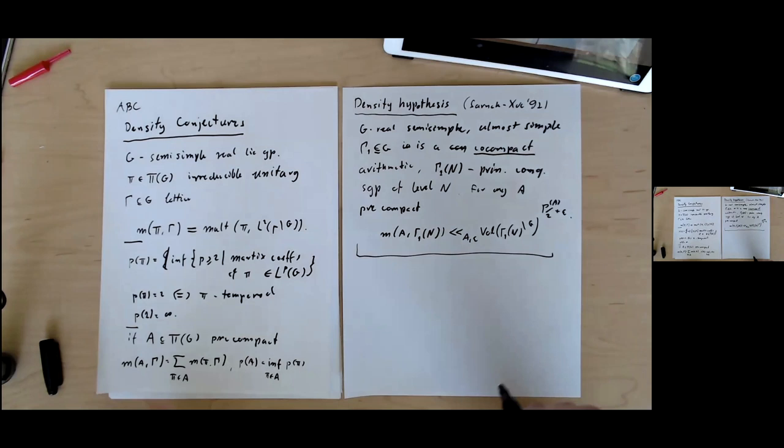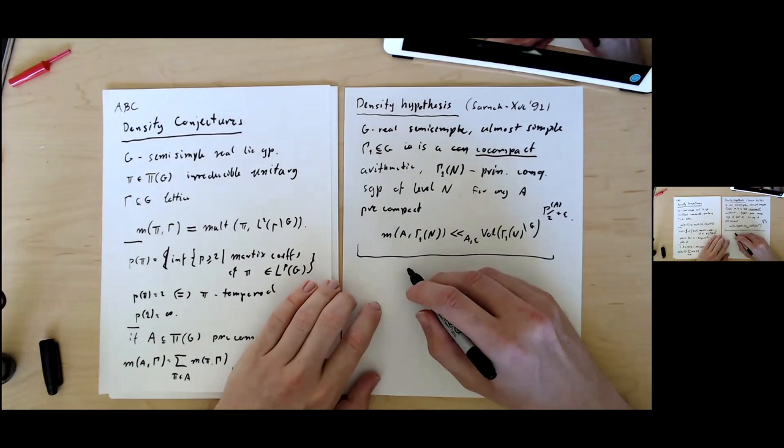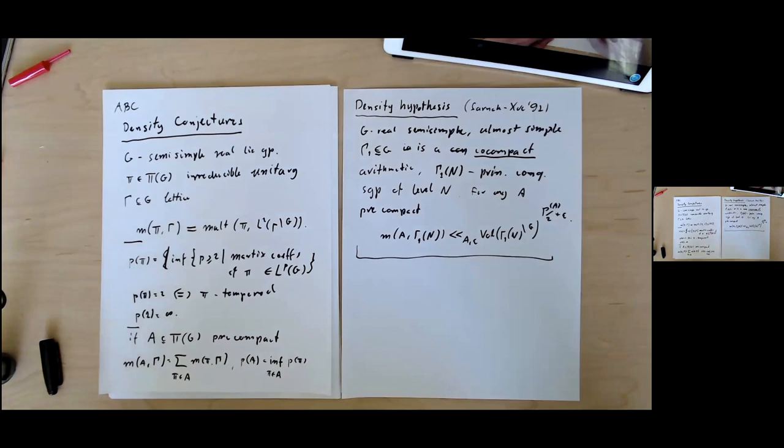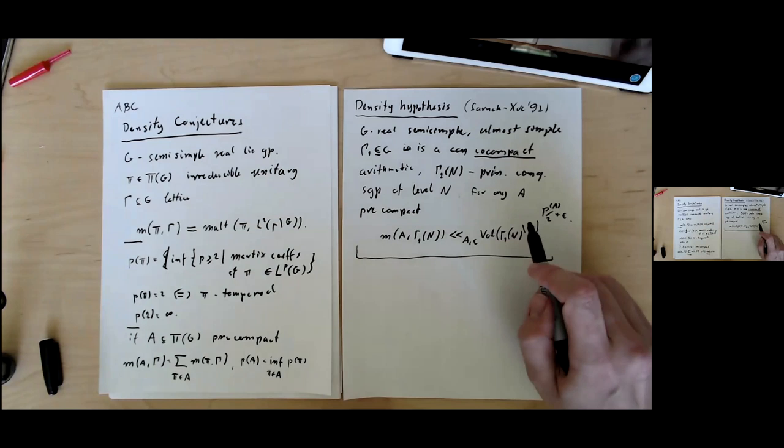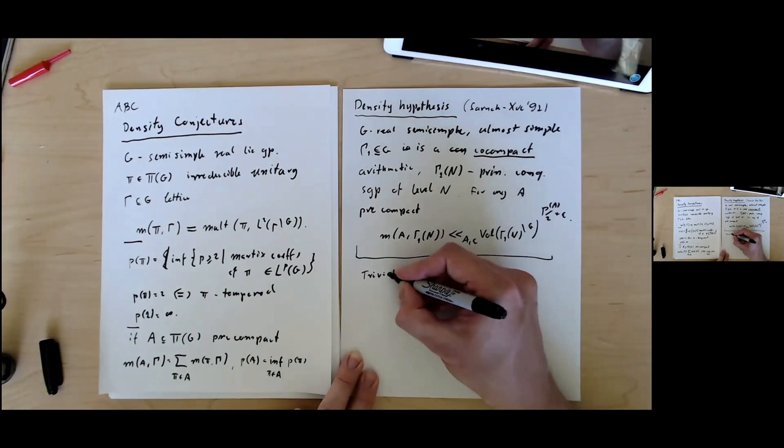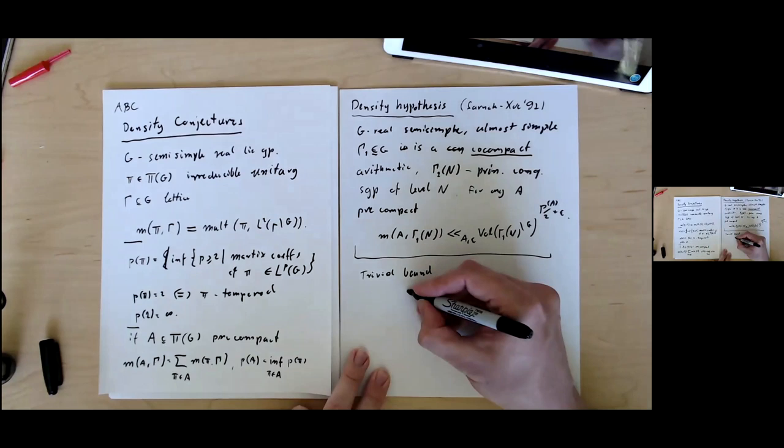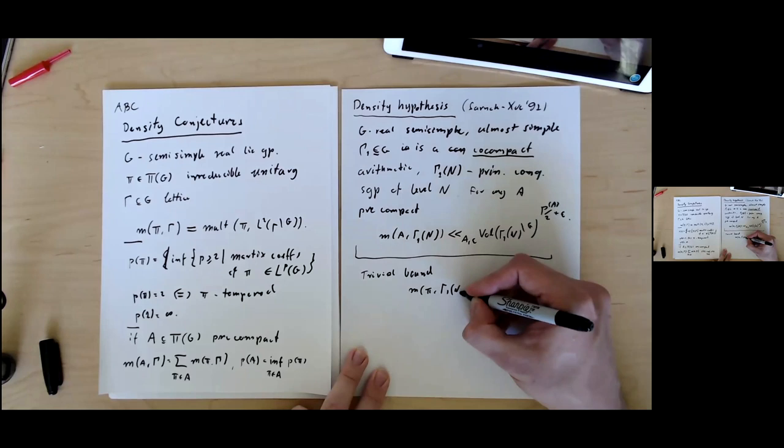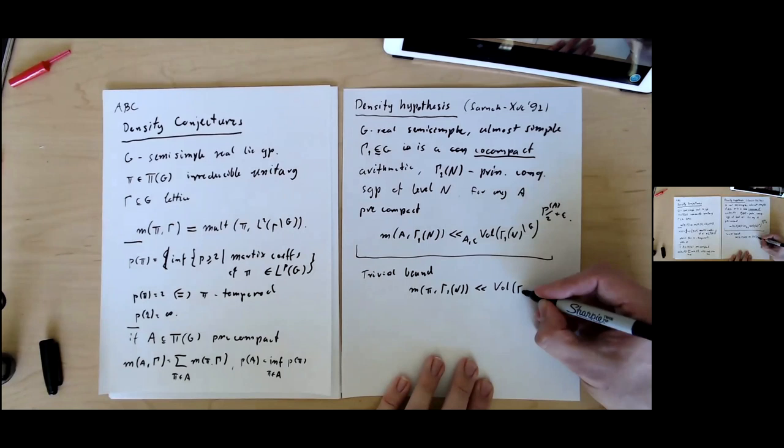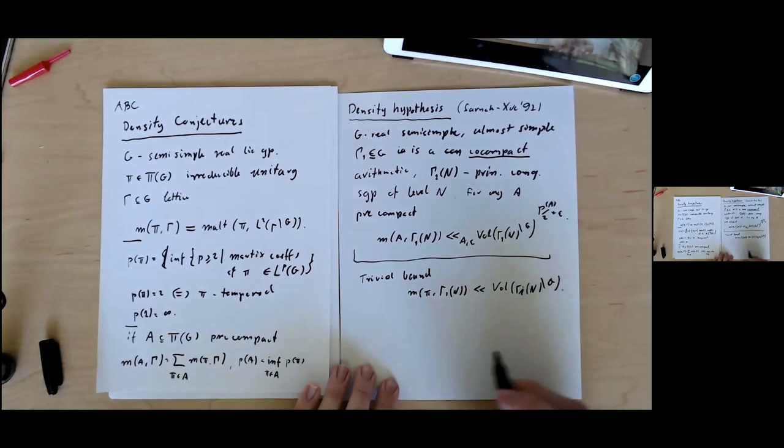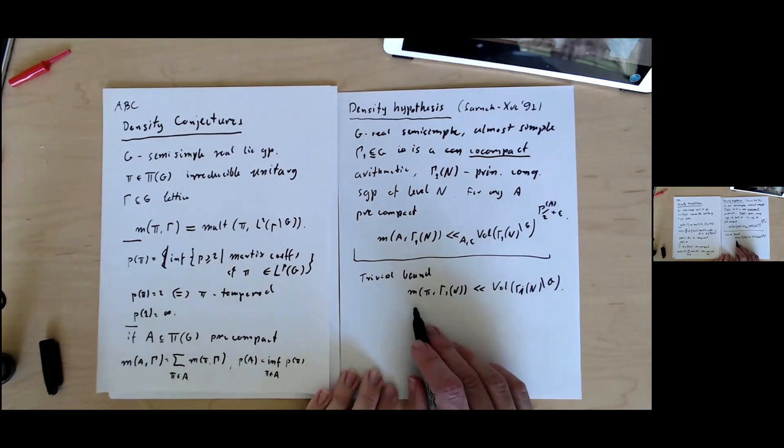In this paper, this conjecture was stated for a singleton, so for a single representation, and it was proven in cases in some absolute rank one cases. Let me just comment why you should expect this. The trivial bound on multiplicity of a new representation in gamma one n is by the volume of the quotient. This bound in general will be sharp because for discrete series, this multiplicity grows linearly in the volume of the lattice.